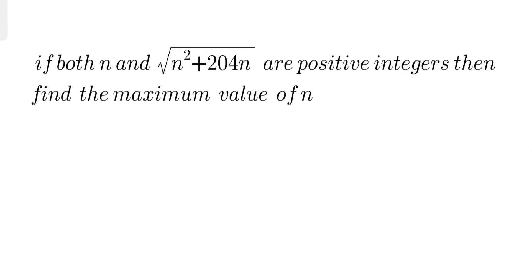Hello everyone, today we are going to solve a number theory problem. This question says: if both n and the square root of n² plus 204n are positive integers, then find the maximum value of n.